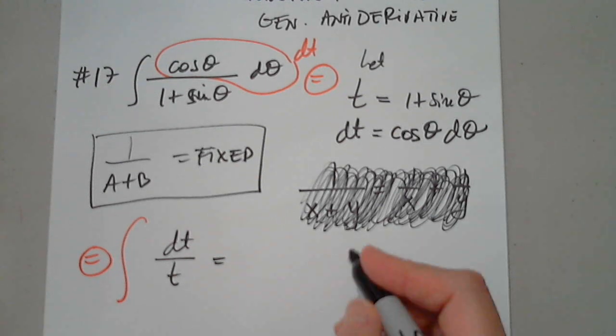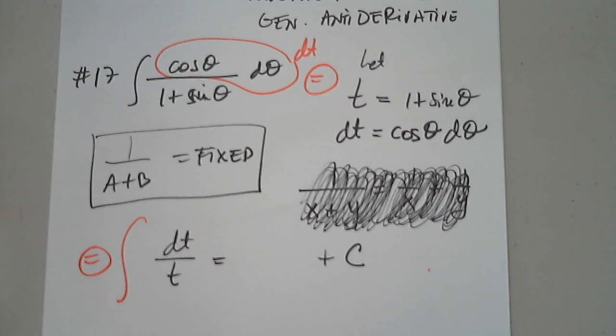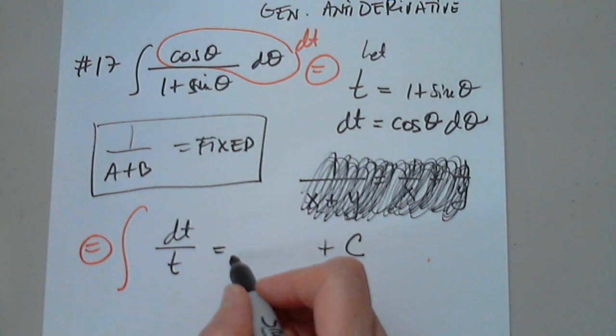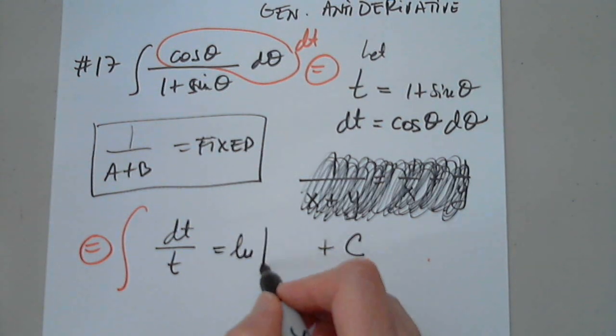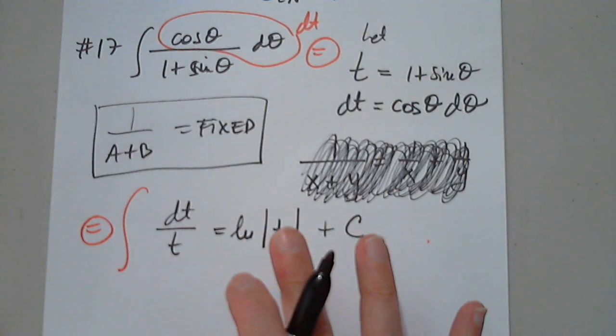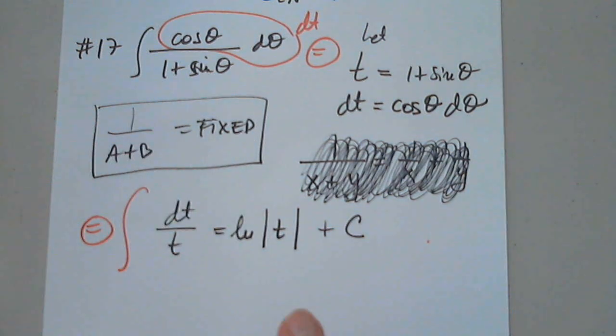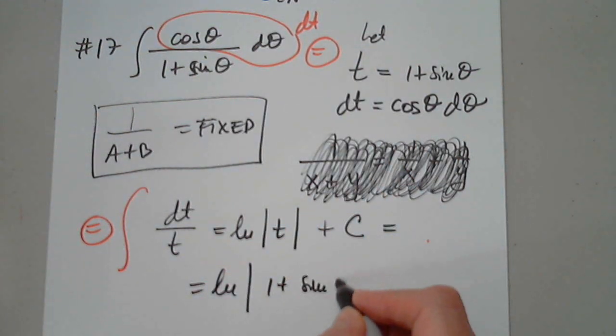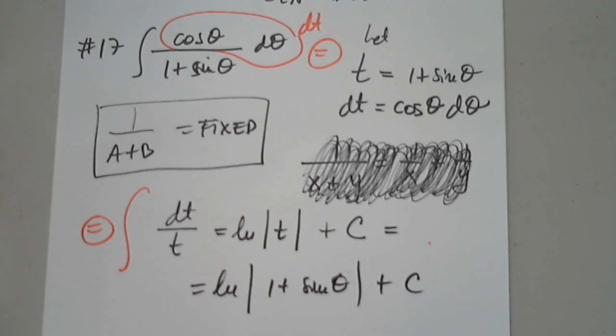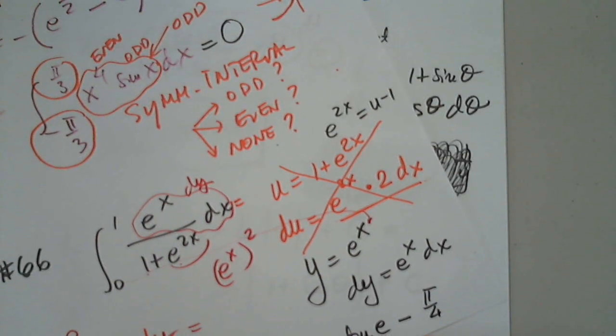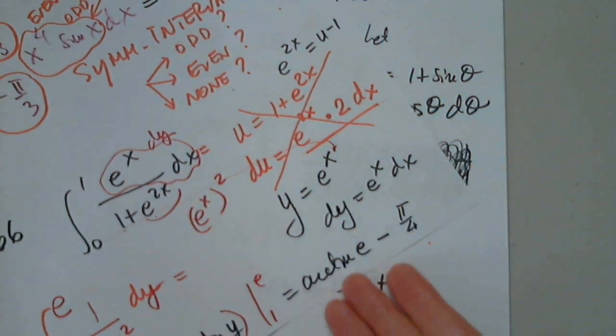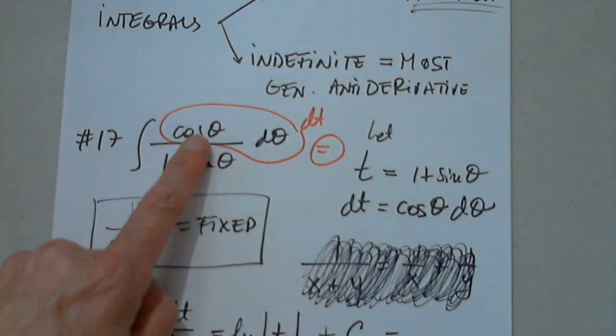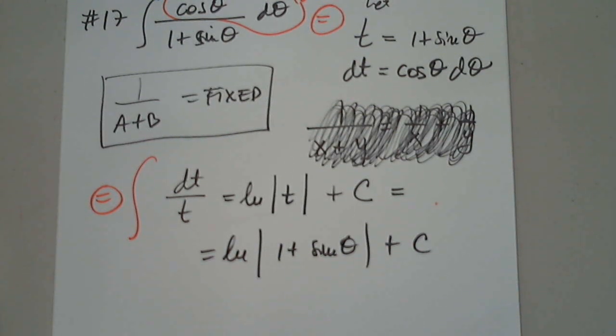And now, final answer. And, of course, which function prime is 1 over T? Natural log T. One thing we have to remember is that in the indefinite integrals, we have to go back to the variable given to us. So I have to replace the T by 1 plus sine theta plus a constant C. We never do this here because this is a number no matter what. If you solve it using X or T or Z or W, it doesn't matter. This number will always be the same. But for the indefinite integrals, the answer has to be given in the variable that we had originally.